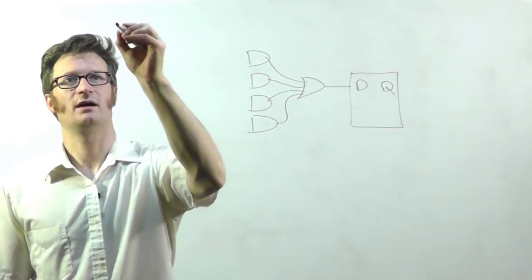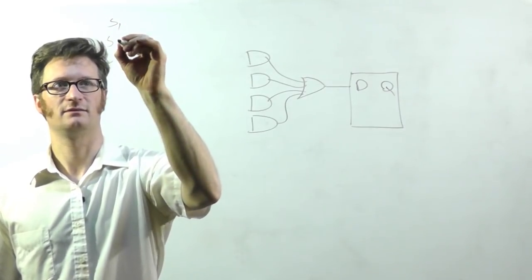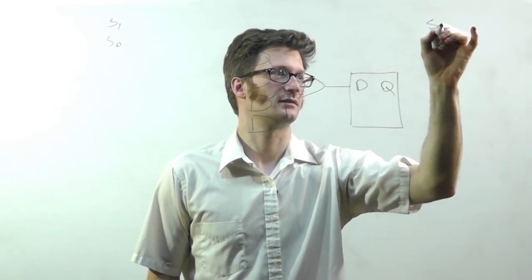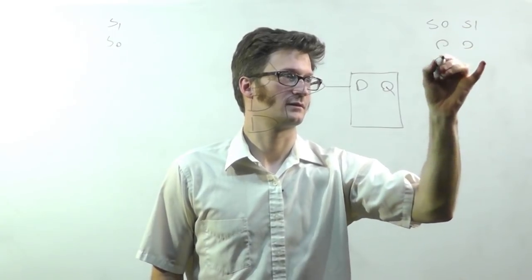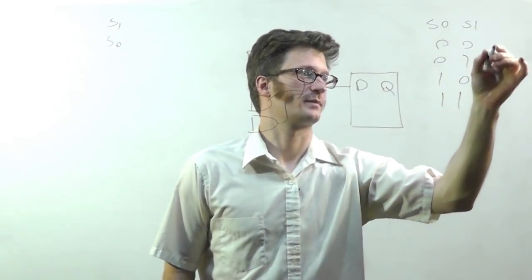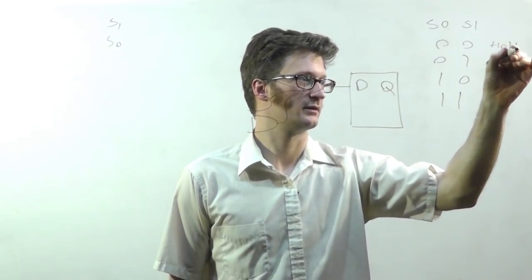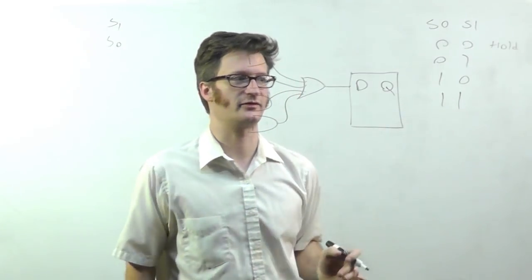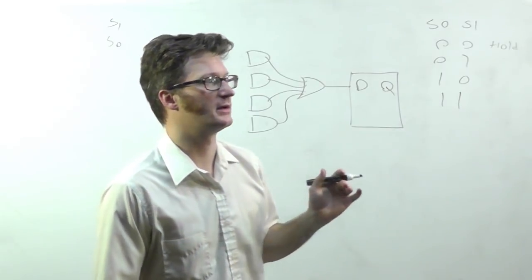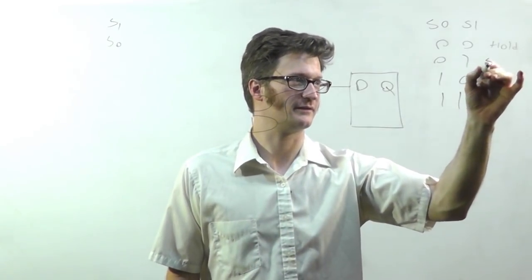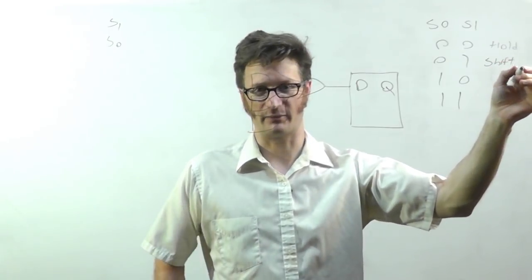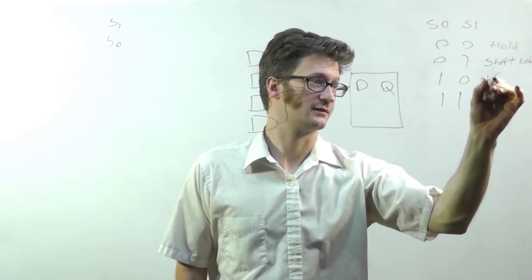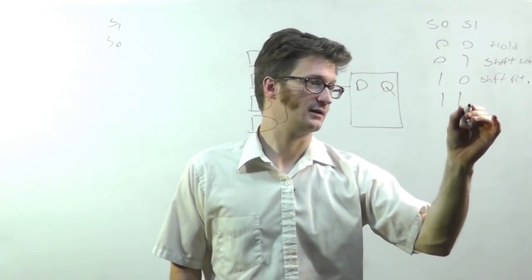And so we have two inputs, S1 and S0. And we'll have a little truth table that would be something like this. This will be hold. Now I may have this wrong. I may have the order of this truth table. That may be standardized and I'm not aware of it. But anyway, it's going to have hold, shift. Sometimes they say up, sometimes they say left.